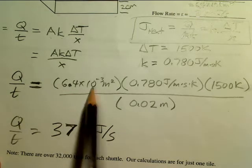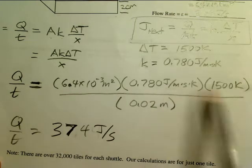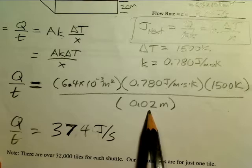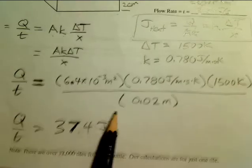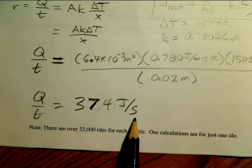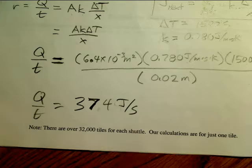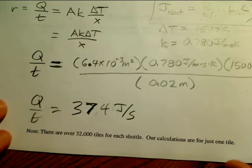cross-sectional area, thermal conductivity, temperature difference, distance over which it travels. Make sure you can do the calculator work and get an answer in joules per second. That's the heat flow that these things must be able to handle and transmit.